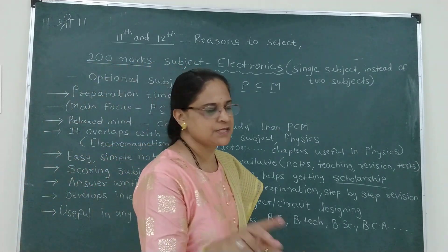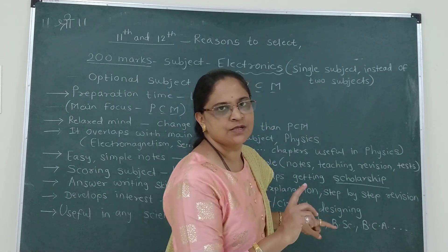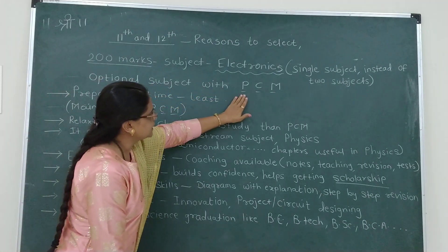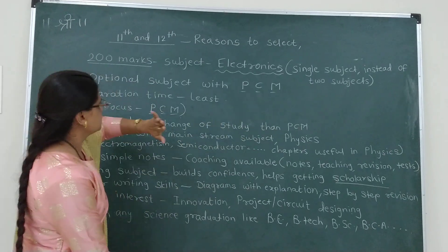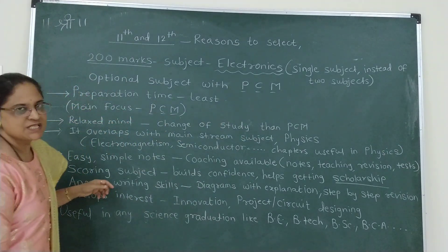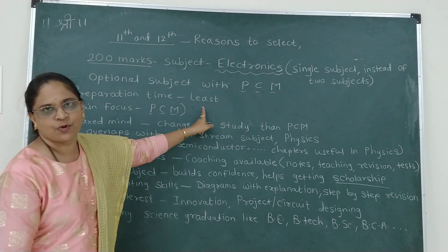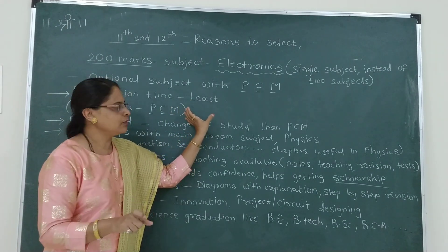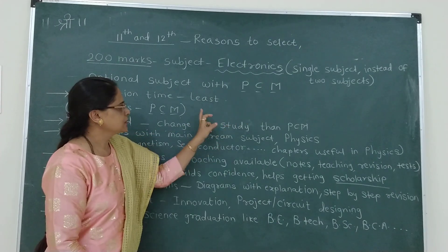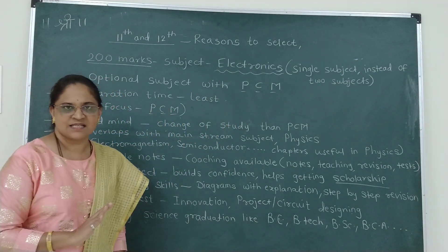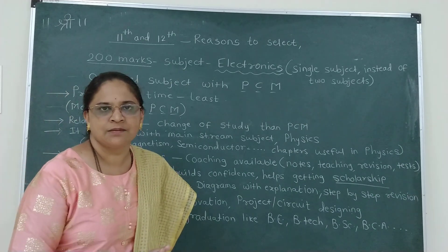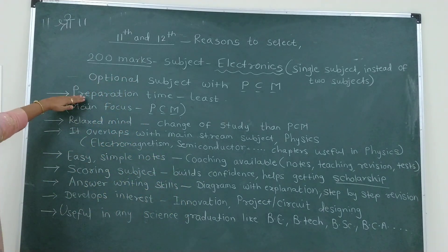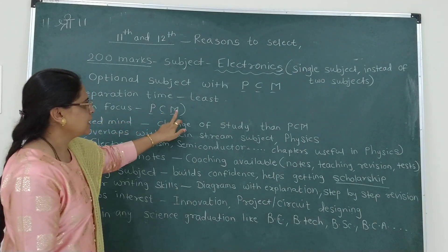So what are the reasons to select electronics, which carries 200 marks? Instead of selecting 2 separate subjects, this is a single subject covering 200 marks, selected alongside physics, chemistry and maths. The first question is: how much time is required? Preparation time is very small — during the period that you study physics, chemistry and maths, you can go with electronics. It needs very less time to study, as it is nothing but modern physics, so it is useful in the study of physics also.